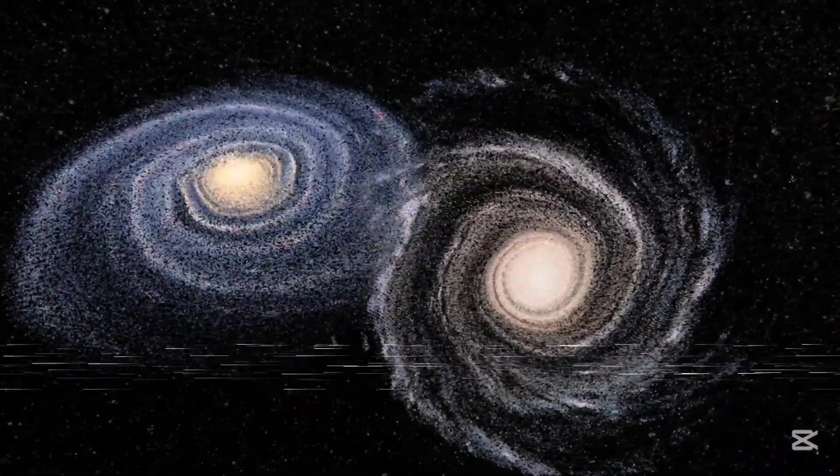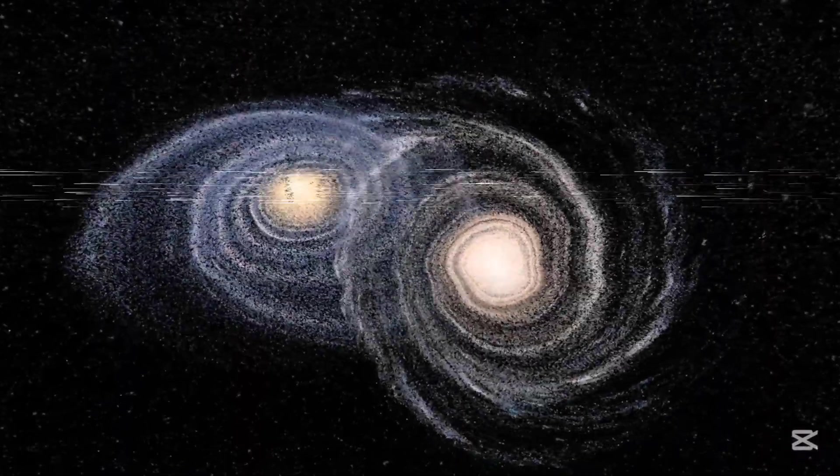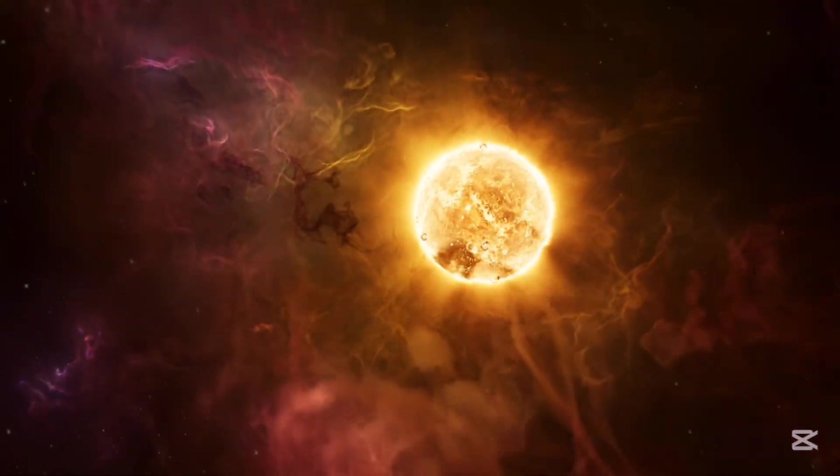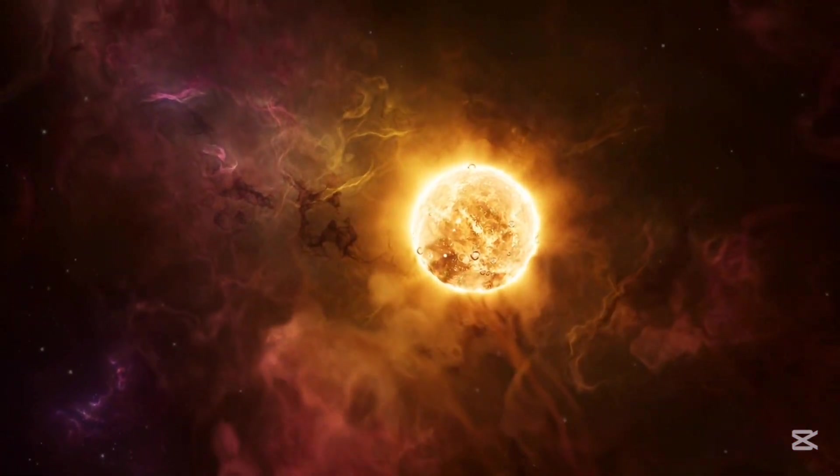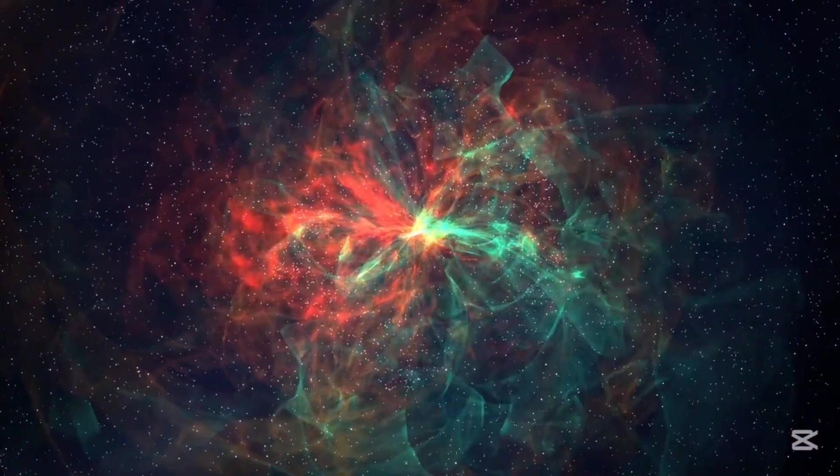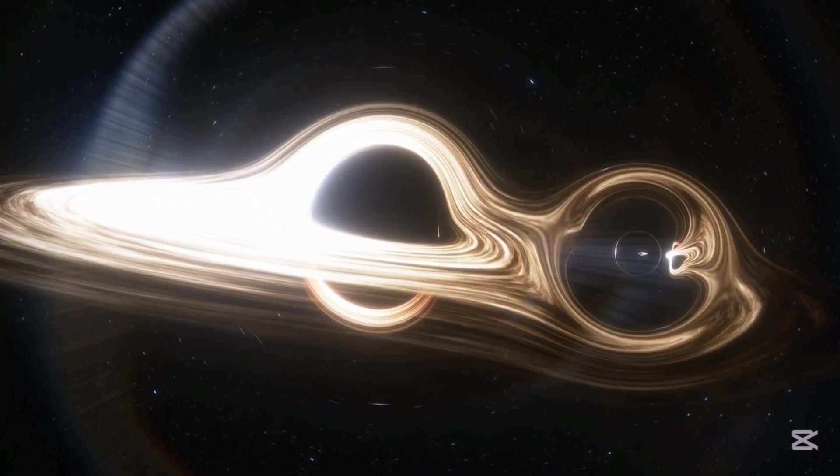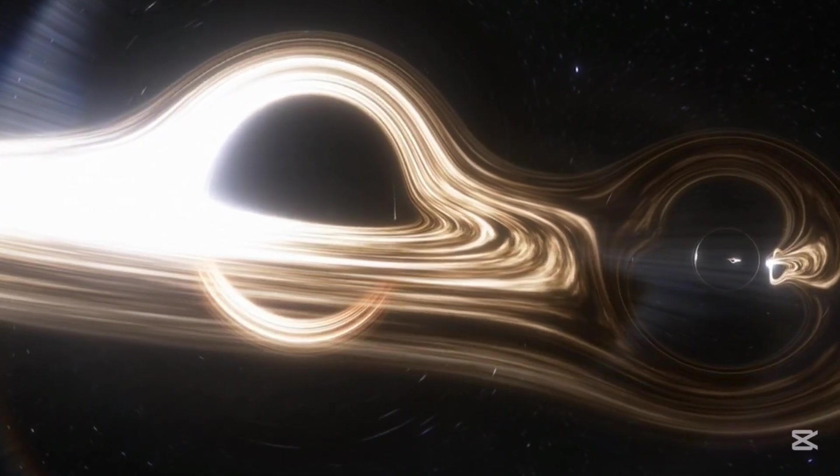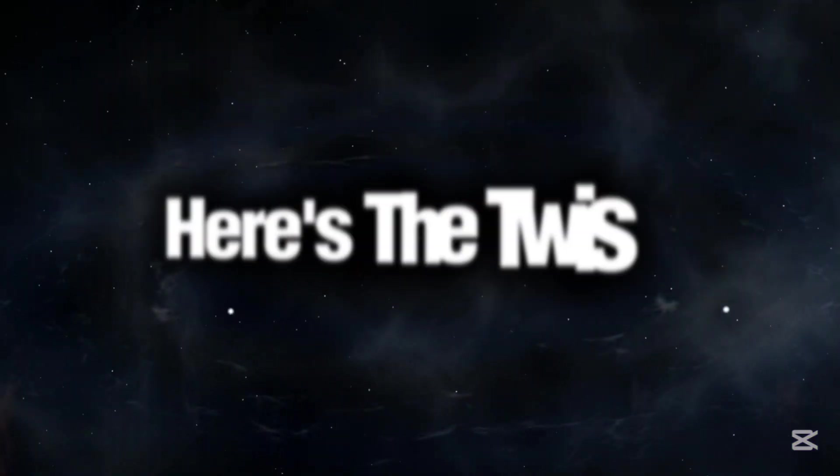At first, the galaxies will merely graze each other, but over the next few billion years, they'll start a violent dance, pulling at each other with gravitational forces so powerful they'll rip stars and gas clouds from their orbits. Picture two massive whirlpools merging into one chaotic vortex. Sounds terrifying, doesn't it?